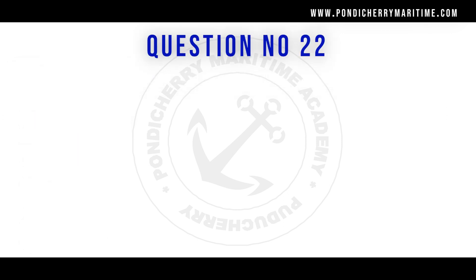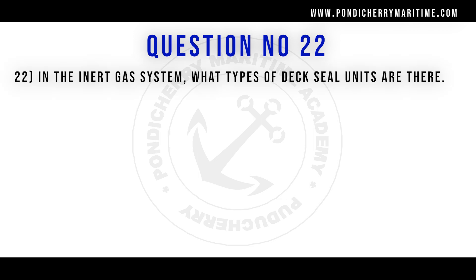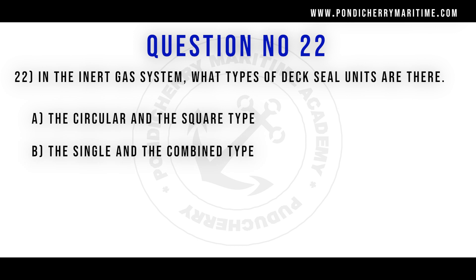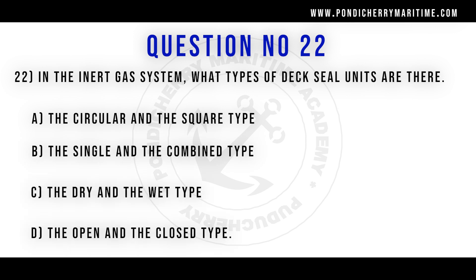Twenty-second question. In the inert gas system, what types of deck seal units are there? Option A. Circular and square type. Option B. Single and combined type. Option C. Dry and wet. Option D. Open and closed type. Correct answer is option C: Dry and wet type.